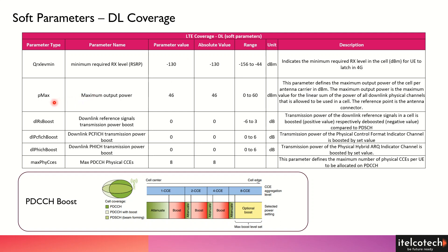The next parameter is Pmax, the maximum output power. From the link budget, the radio module transmit power is 43 dBm, but we can increase or decrease it — up to 47.8 or 49 dBm, or even 60 dBm. However, we cannot keep increasing power everywhere because it can lead to interference in the network, so it must be properly designed and optimized.